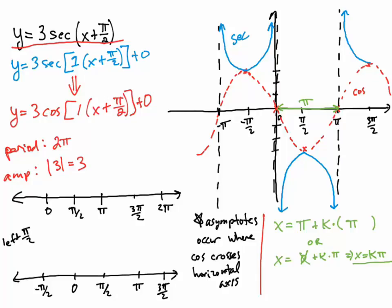It's also useful to state the range for the secant function. On the secant graph, the range goes from negative infinity up to and including negative 3, union 3 to positive infinity.